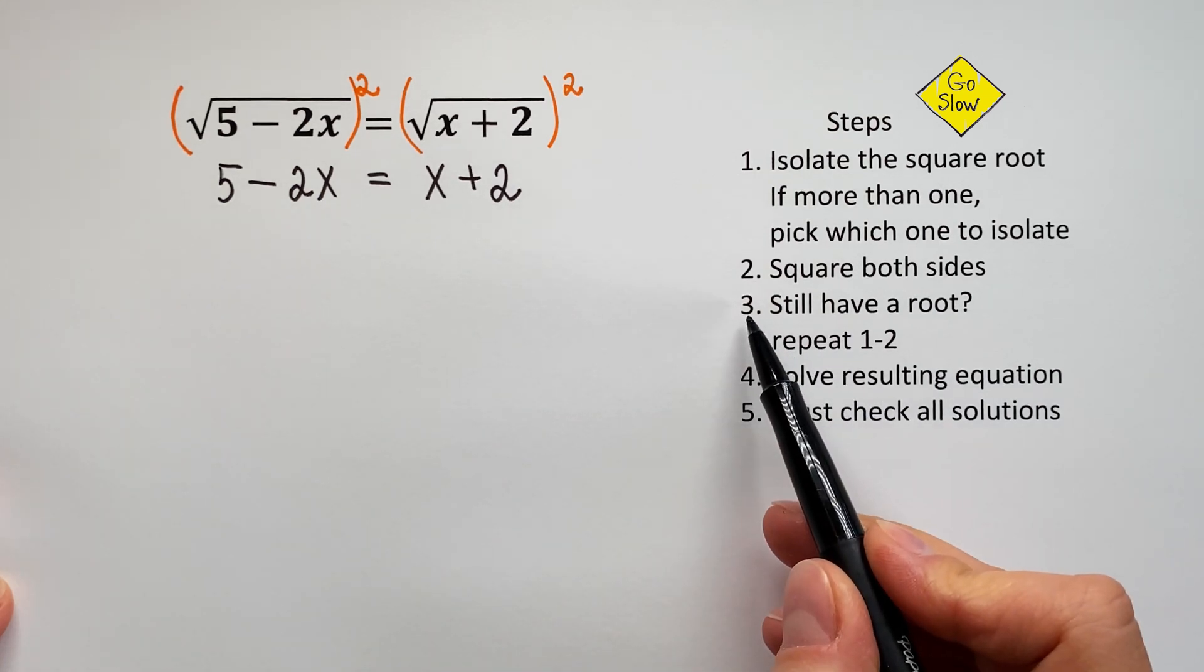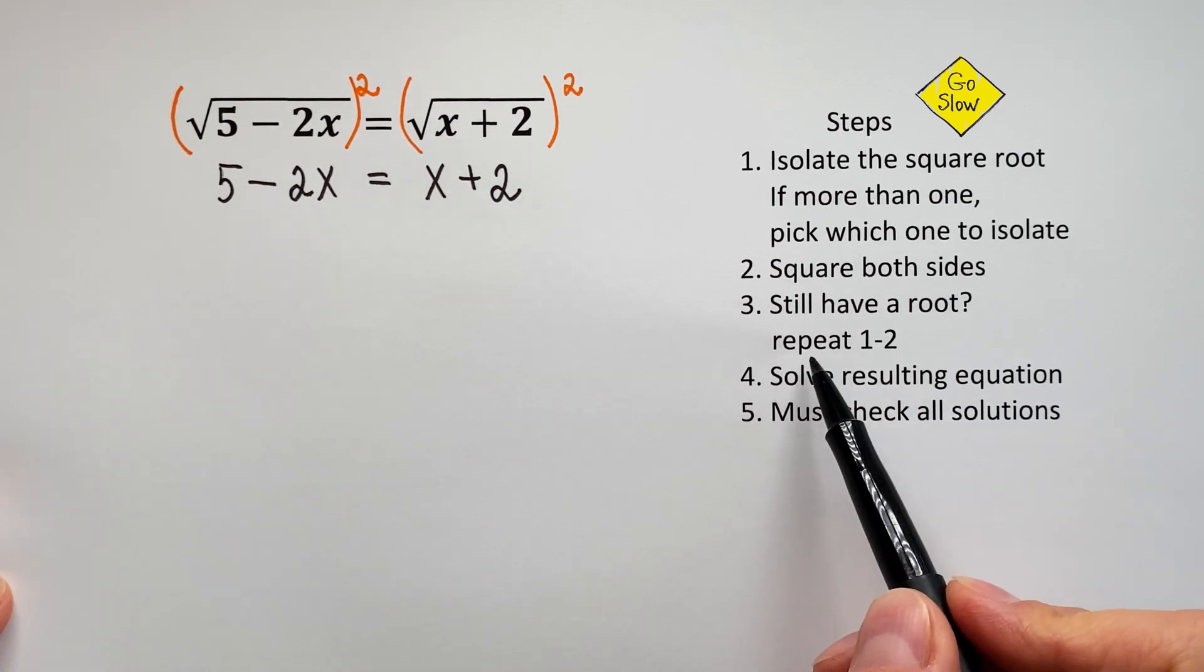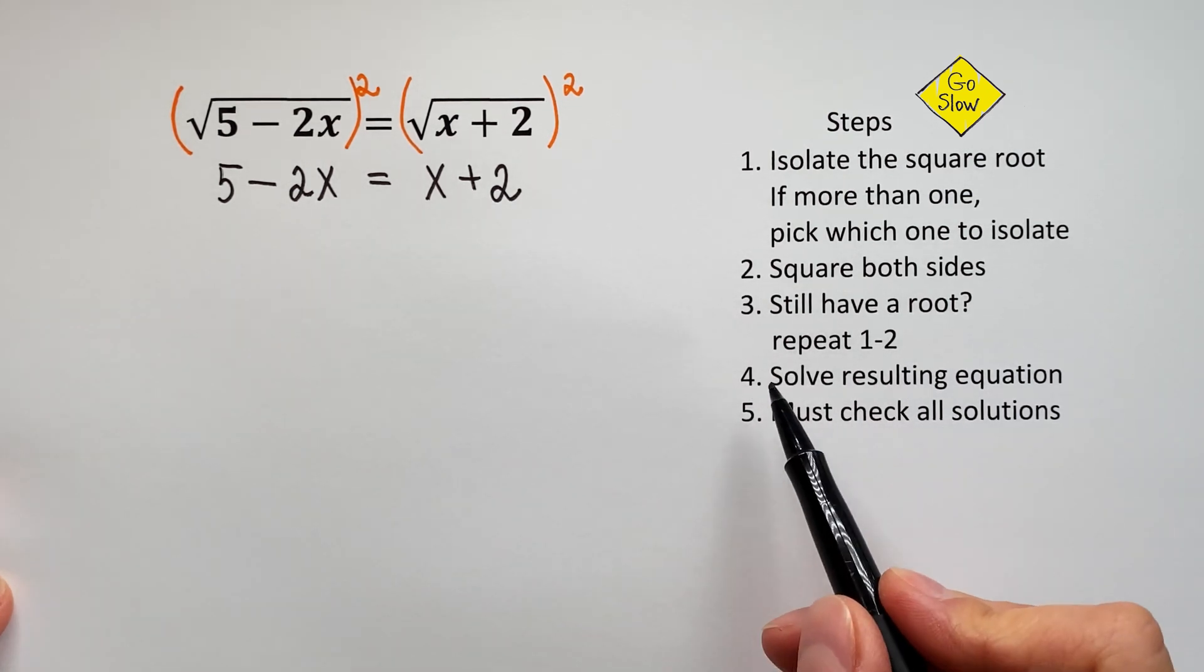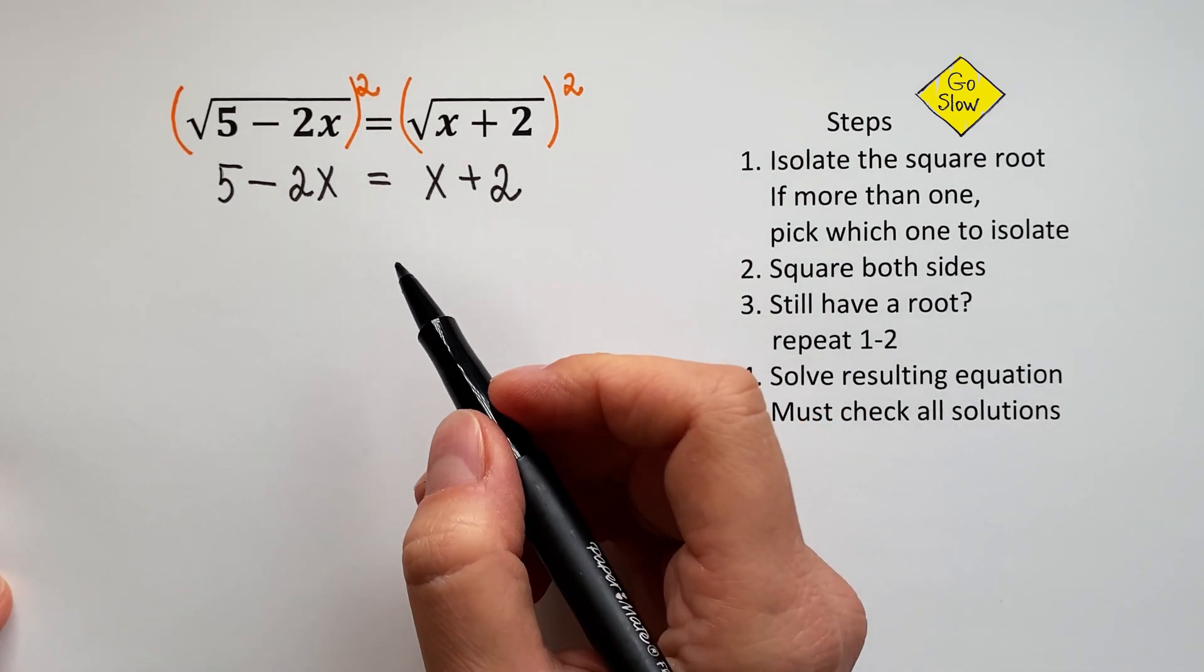Look at step number 3. Still have a root? Nope! We don't have a root anymore, so we don't need to repeat the steps. The next step says solve resulting equation. So we can totally do it.